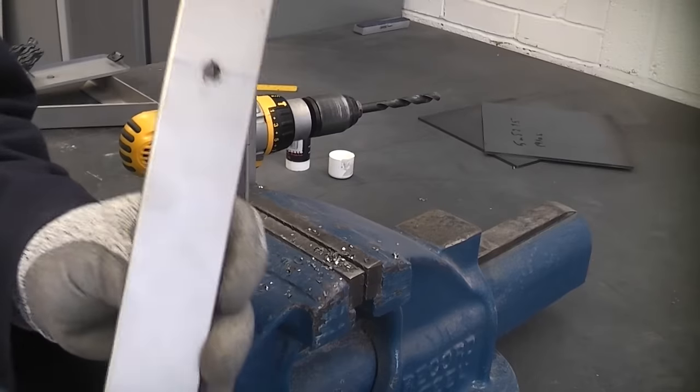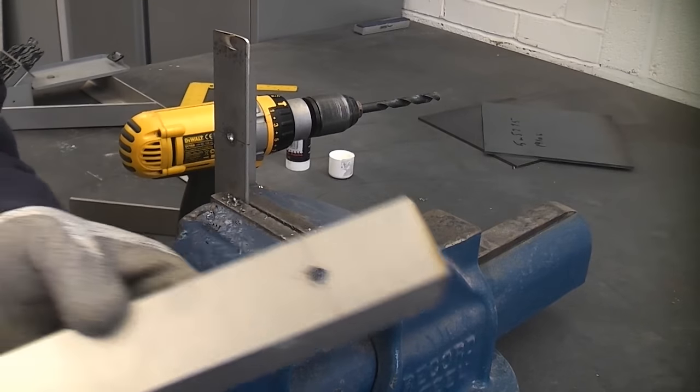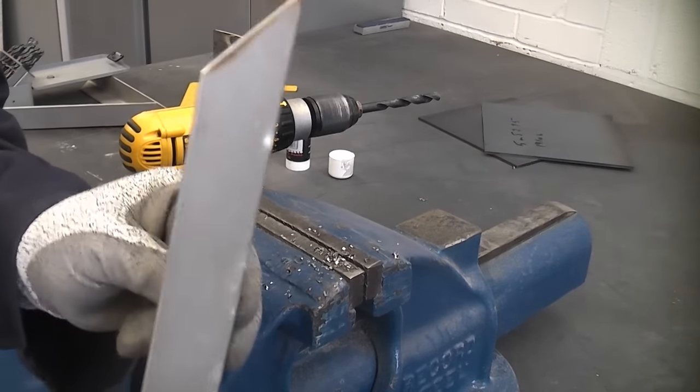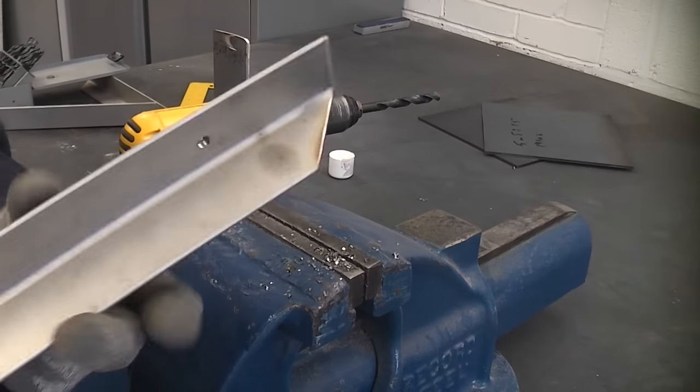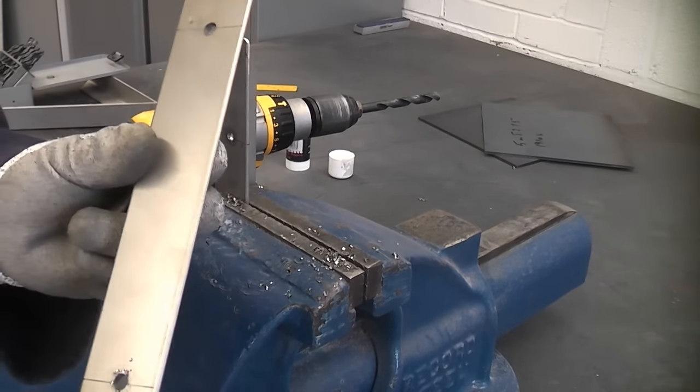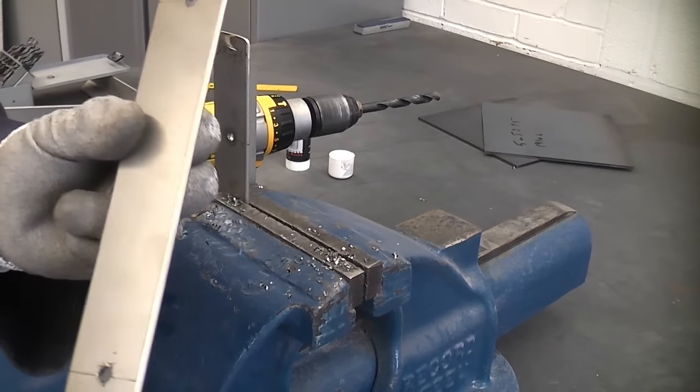Drilling stainless steel like this can be very difficult. This is 316 stainless which is non-magnetic. This can be very difficult to drill. The problem is when you're drilling it, it can actually work harden, and if it work hardens it is almost impossible to drill.